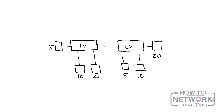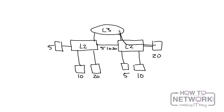Let's go ahead and solidify this concept. Here we have two layer 2 switches connecting multiple VLANs — VLANs 5, 10, and 20 — and there's a trunk between the two layer 2 switches. For any of these VLANs to communicate with one another, they're going to need a layer 3 device, in this case a router. All traffic that needs to get from one VLAN to another will be forwarded from the switch up to the layer 3 device and back down into the switching infrastructure.